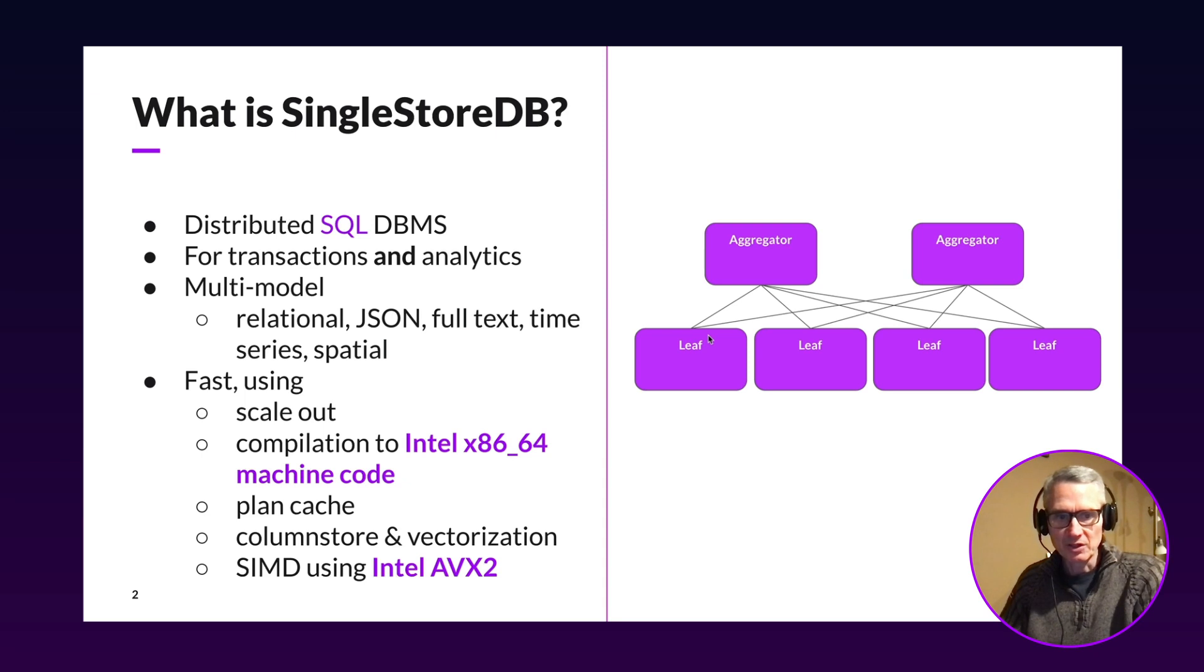And we use SIMD instructions, including AVX2 SIMD instructions on Intel chips. So on the right, we've got a picture of our architecture. The data is horizontally partitioned across the leaf nodes on the bottom. And a client application, if it wants to run a command, sends it to the aggregator who compiles it or looks it up in the plan cache and then runs it by farming out the pieces to the leaf nodes as required.